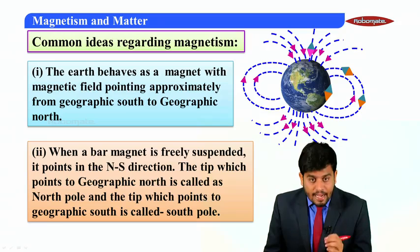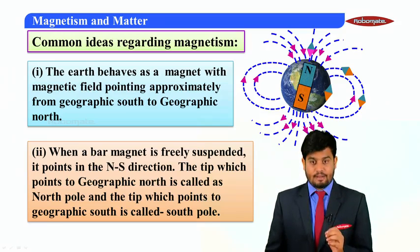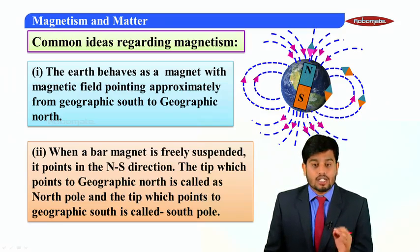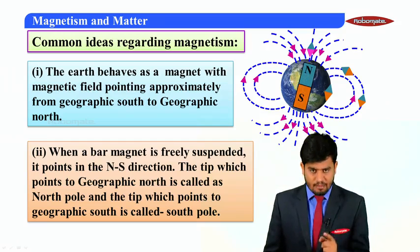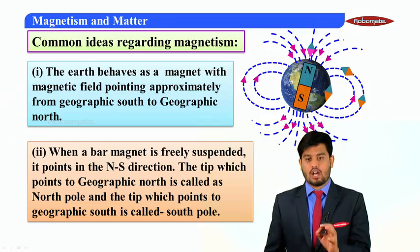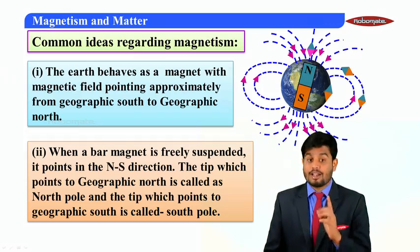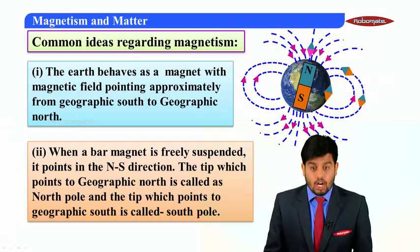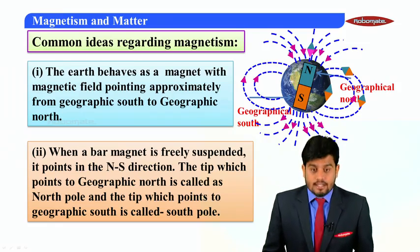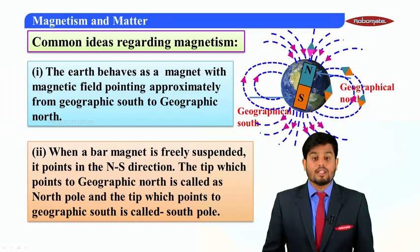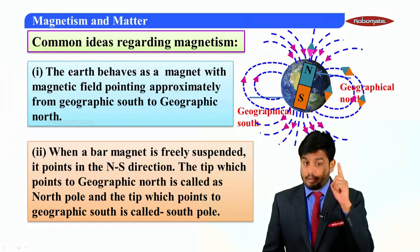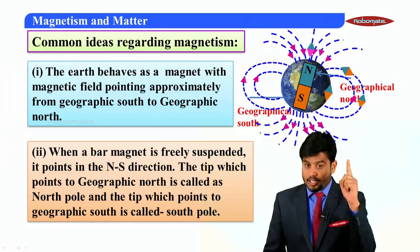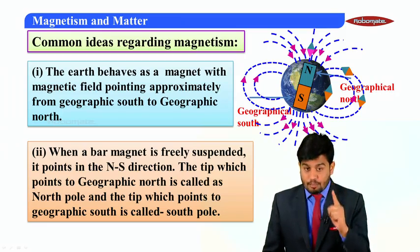When a bar magnet is freely suspended, it points in the north-south direction. The tip which points the geographic north is called the north pole, and the tip which points the geographic south is called the south pole.